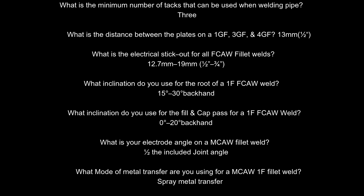What inclination do you use for the root of a 1F FCAW weld? 15 to 30 degrees, 30-degree backhand. What inclination do you use for the fill and cap pass for a 1F FCAW weld? 0 to 20 degrees backhand.